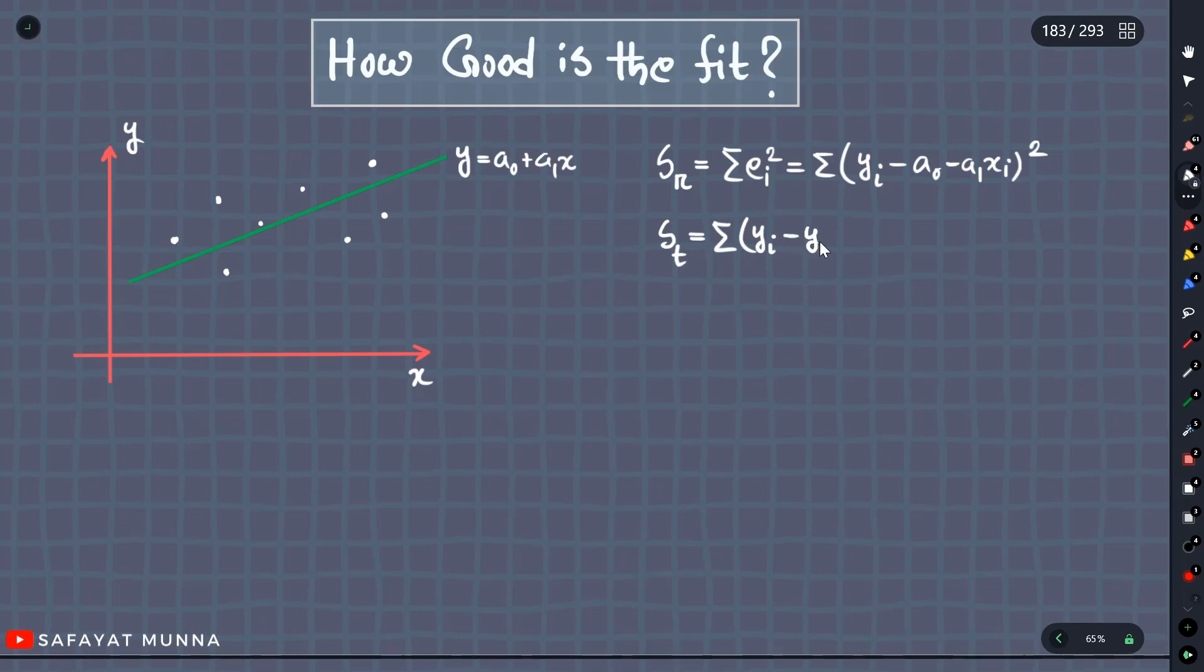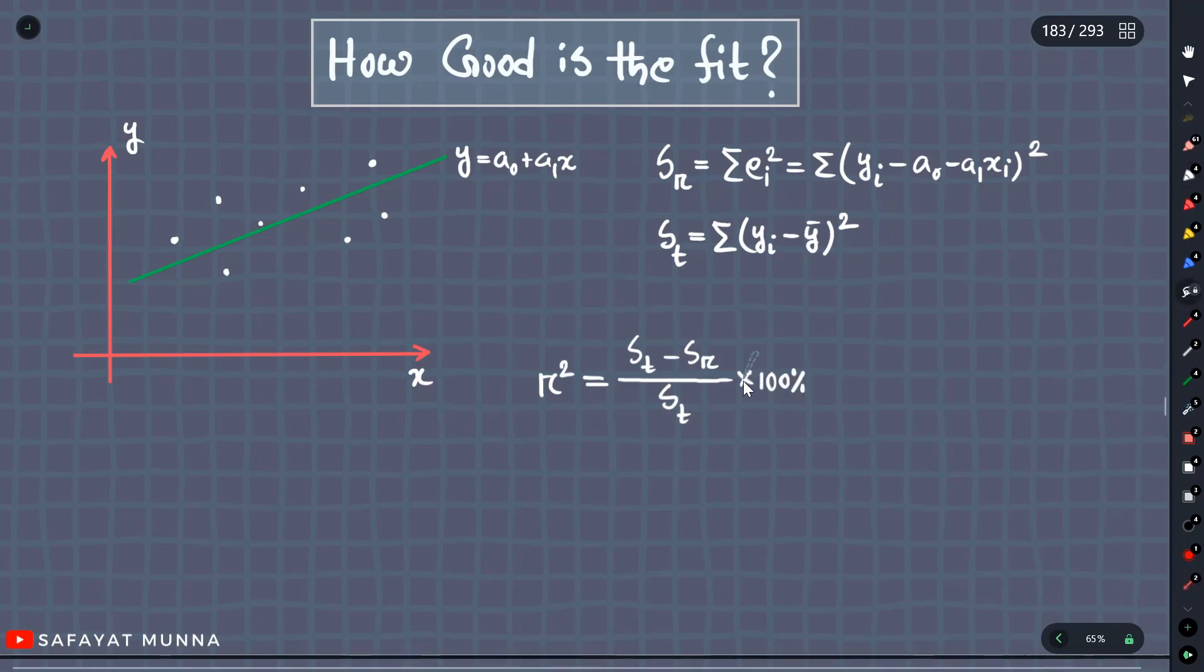This means that we can use the mean. The coefficient introduced is the coefficient of determination. This is defined as R² equals st minus sr divided by st into 100%. The R² value, the coefficient of determination.